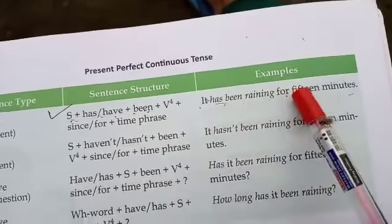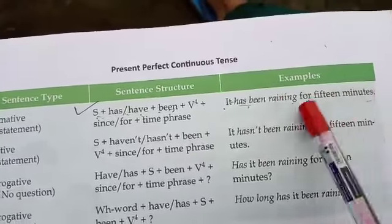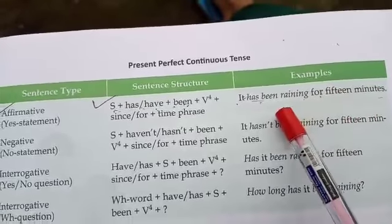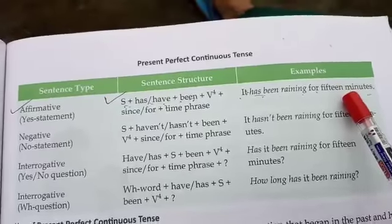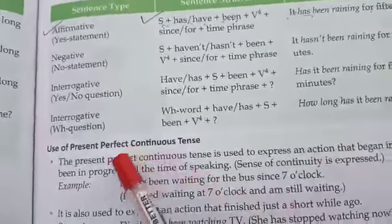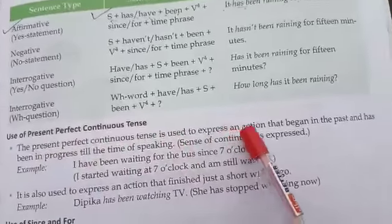It has been raining for 15 minutes. Let's say time has been given in this structure or example. Now let's understand: present perfect continuous tense is used to express an action that began in the past and has been in progress till the time of speaking.